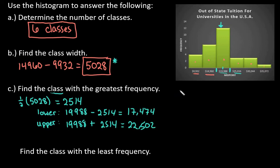So the class with the greatest frequency is the values that are between 17,474 and 22,502.